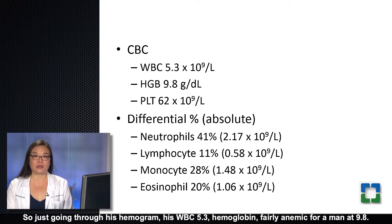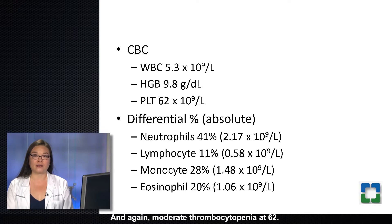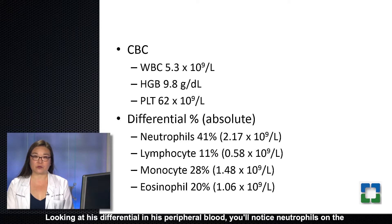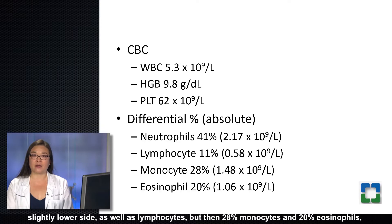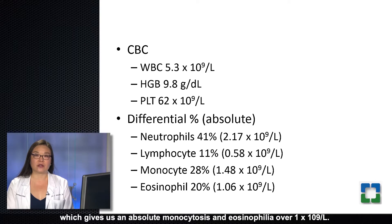Just going through his hemogram: his WBC is 5.3, hemoglobin is fairly anemic for a man at 9.8, and again moderate thrombocytopenia at 62. Looking at his differential in his peripheral blood, you'll notice neutrophils on the slightly lower side, as well as lymphocytes, but then 28% monocytes and 20% eosinophils, which gives us an absolute monocytosis and eosinophilia over 1 times 10 to the 9th per liter.